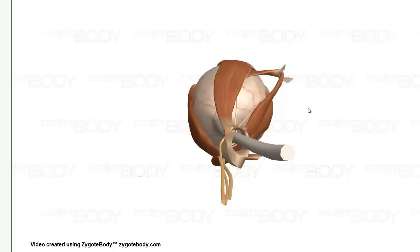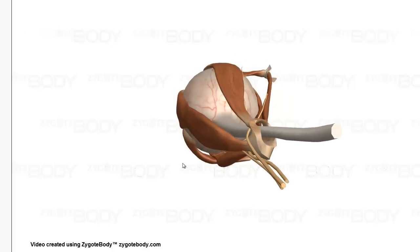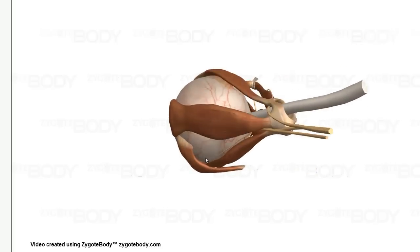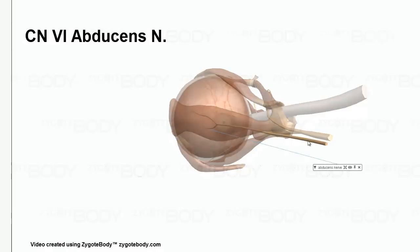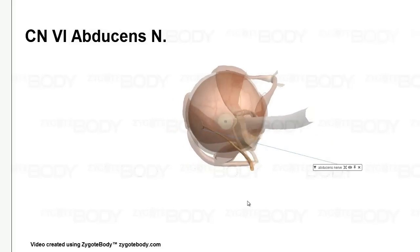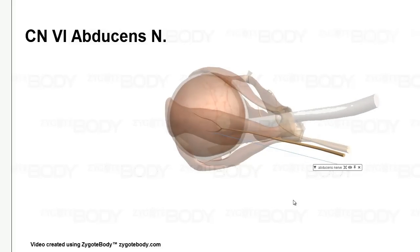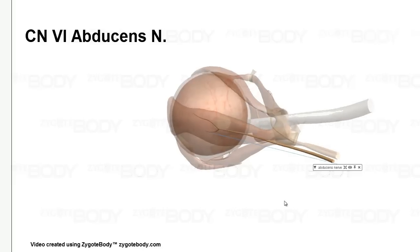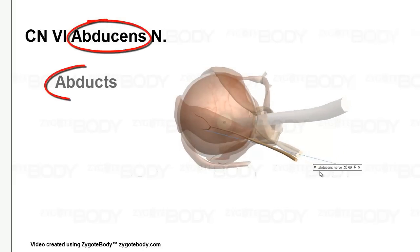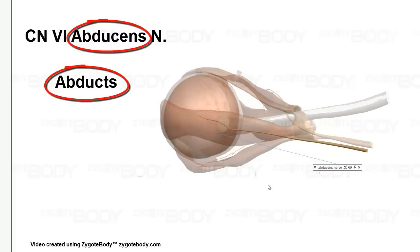Then if we go to the lateral rectus muscle, the lateral rectus muscle is going to be innervated by the abducens nerve. Remember, when the muscle contracts it's going to abduct the eye — so that's a way to remember that the abducens nerve abducts the eye.